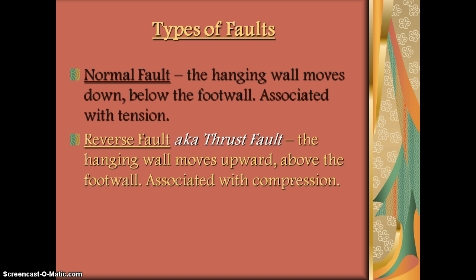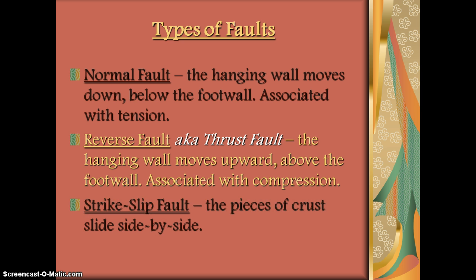The next one, due to compressional forces, is called a reverse or a thrust fault. In this case, the hanging wall will be pushed up above the foot wall. A convergent boundary could be a very common area where you'll see thrust or reverse faulting. And lastly, the strike-slip faults most often occur around the transform boundaries, because that's where shearing is taking place.